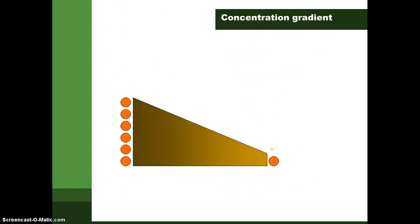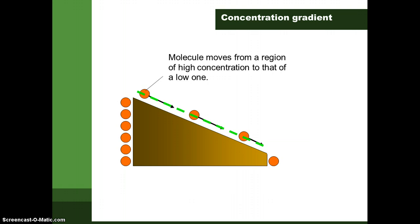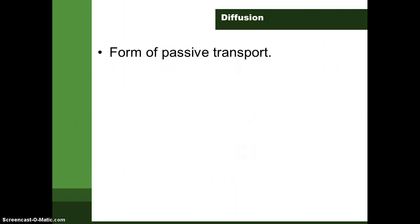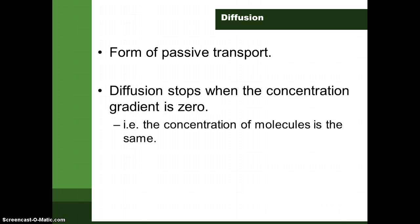As you can see, on the left-hand side there is high concentration and on the right, molecules will tend to move from high concentration to low concentration down a concentration gradient. For example, when you place a lump of sugar in water, it will dissolve, and after some time the entire beaker of water becomes a sugar solution. Diffusion is a form of passive transport and will stop when the concentration gradient is zero — that is, when the concentration of molecules at any point in the solution becomes the same.